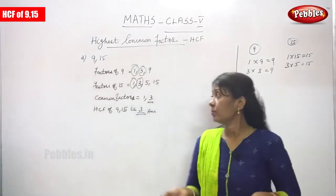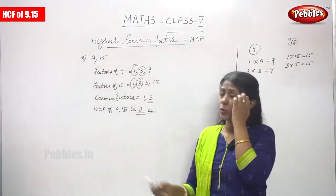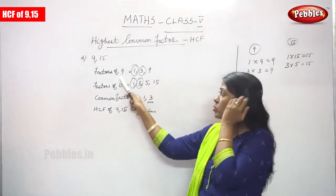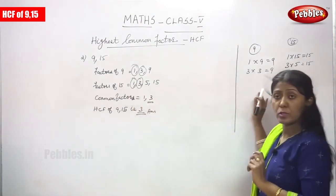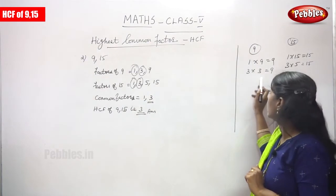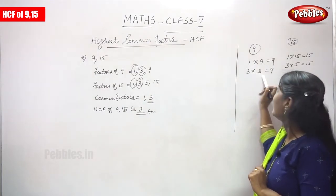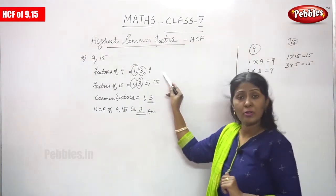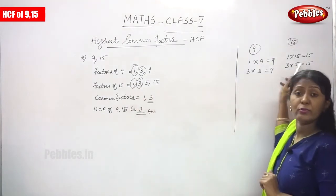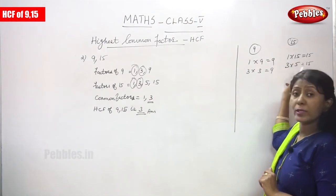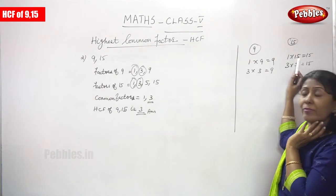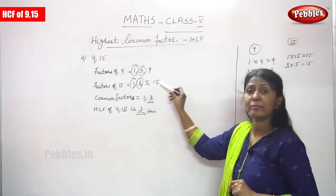I will repeat the sum again. You have to find out the HCF of 9 and 15. Factors of 9: I have written 1 into 9 you can get 9, and 3 into 3 you can get 9. So the factors of 9 are 1, 3, and 9. Factors of 15: 1 into 15 is equal to 15, and 3 into 5 is equal to 15. So the factors of 15 are 1, 3, 5, and 15.